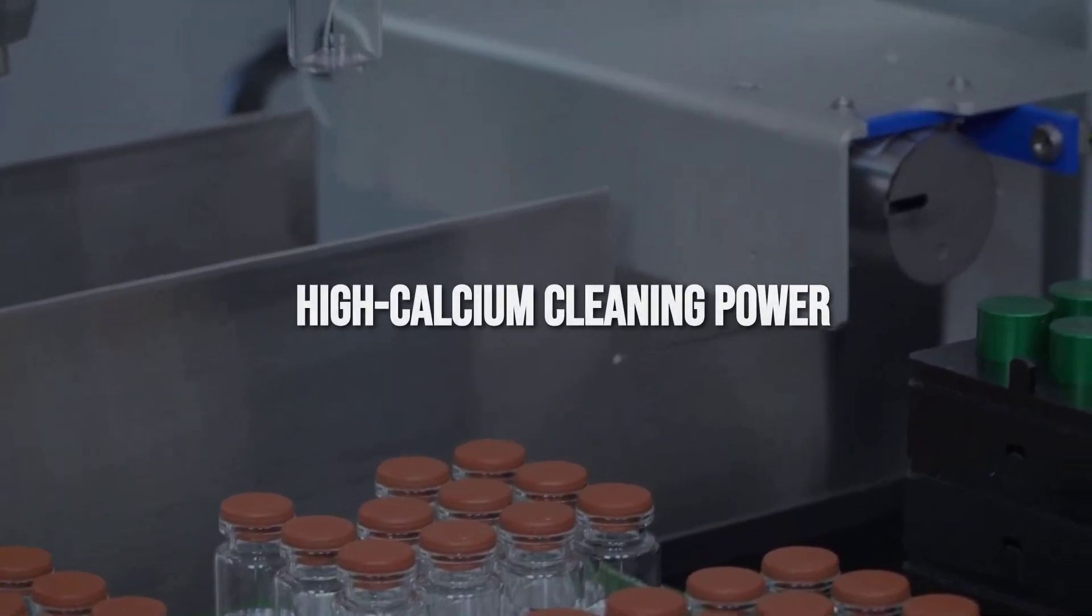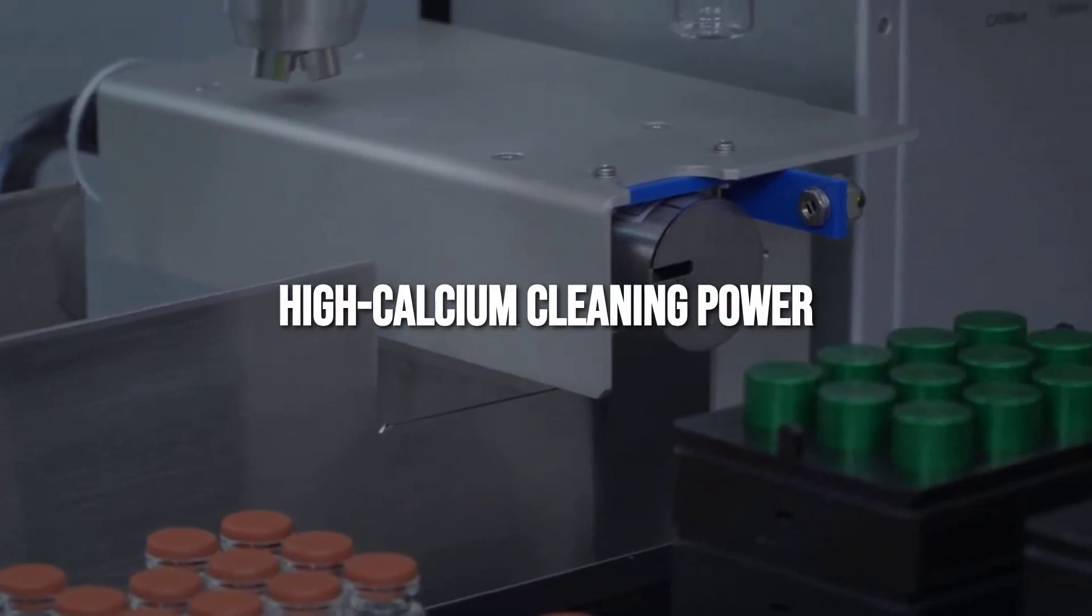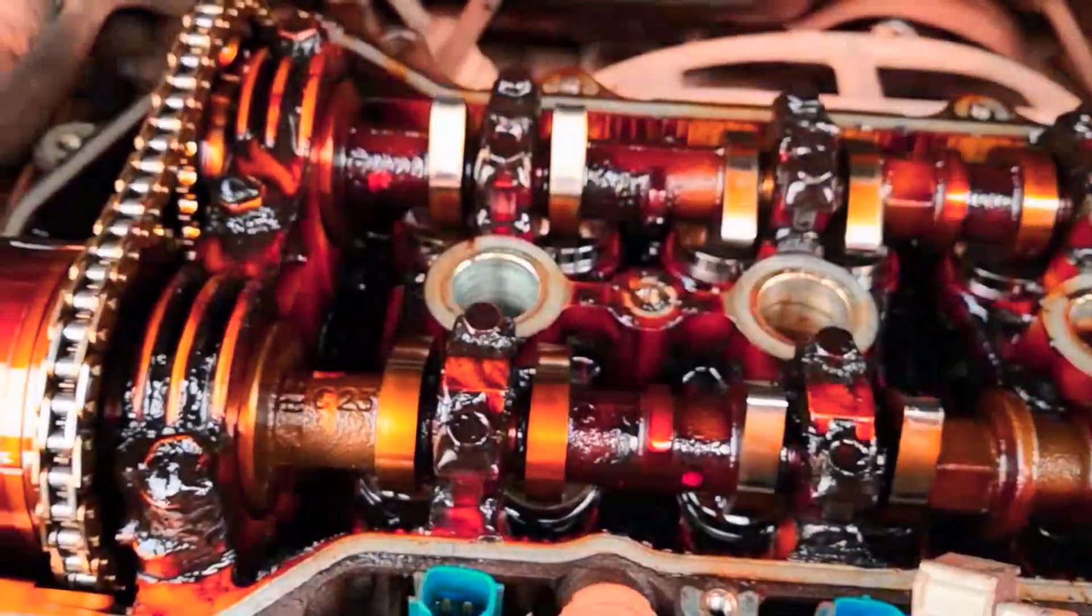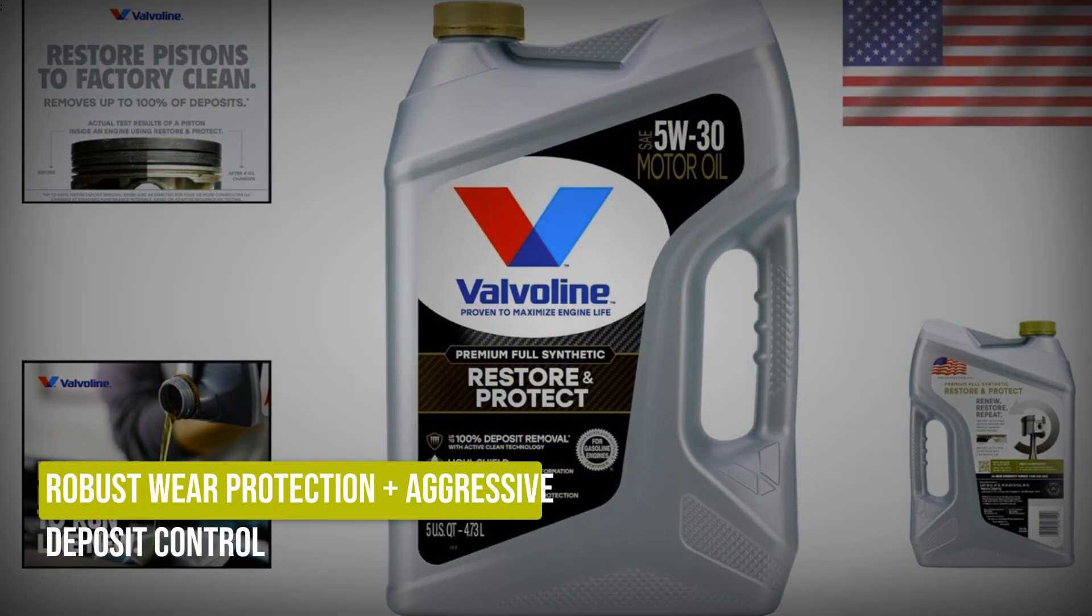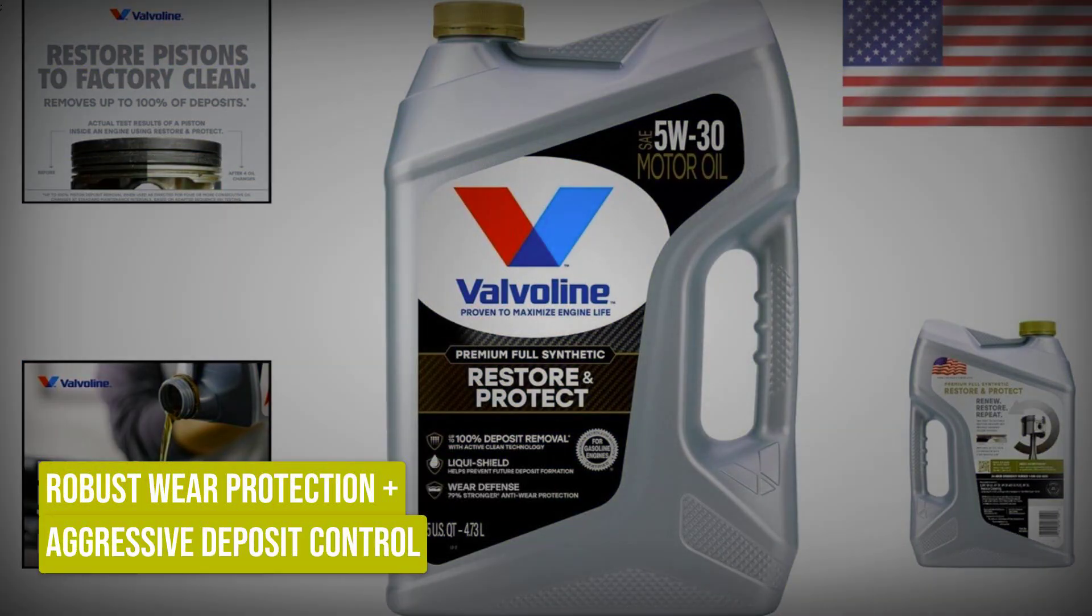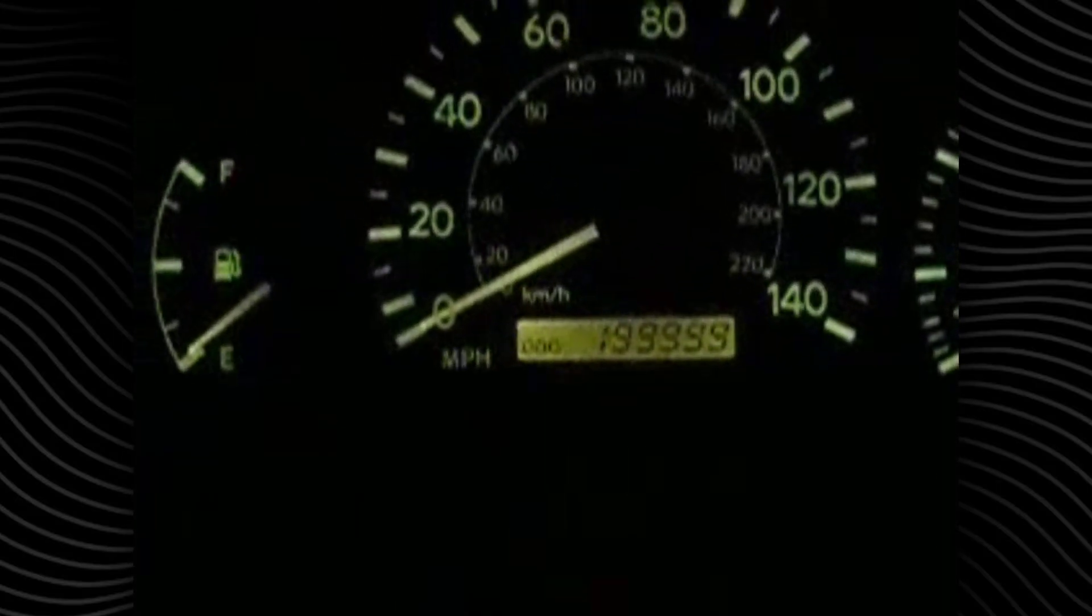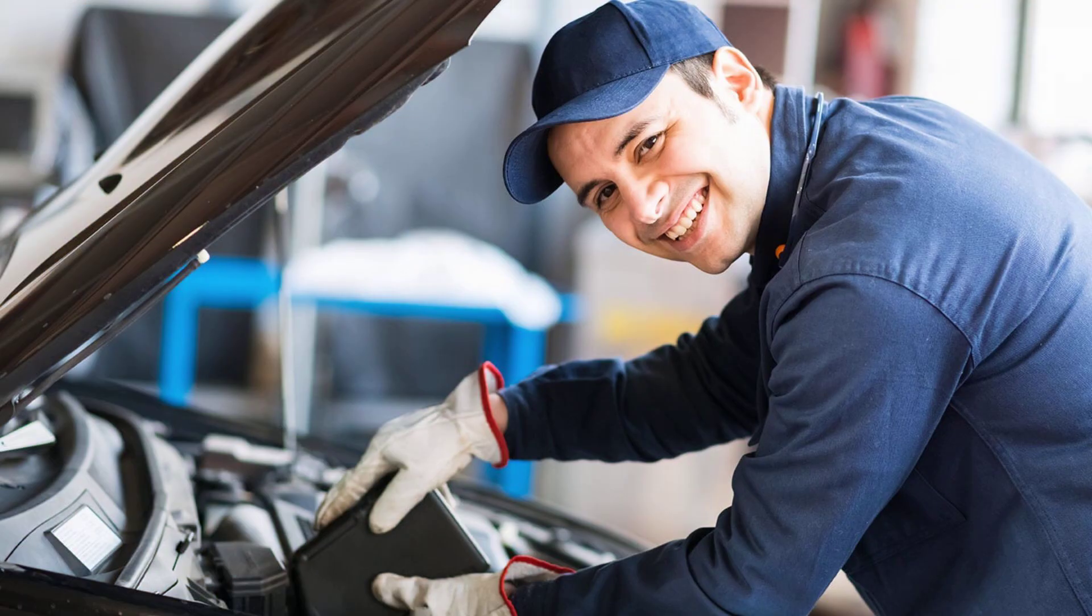High levels of calcium and magnesium detergents support this cleaning action, reducing the risk of sticky rings or sludge that can choke off oil flow over time. This combination of robust wear protection and aggressive deposit control means Valvoline Advanced keeps engines running cleaner, longer, even as miles add up.